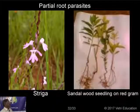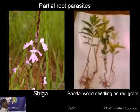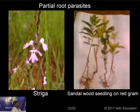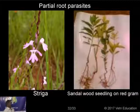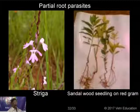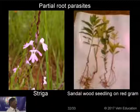Partial root parasites get only water from the supporting plant. The first example is Striga, generally found in agriculture fields, giving different colored flowers — violet, brown, and sometimes pink. It is parasitic mainly on grass plant roots. The second example is the sandalwood plant, which is a parasite only at the seedling stage — it has a connection with plants like red gram (Cajanus cajan). After some time, it becomes an independent plant.